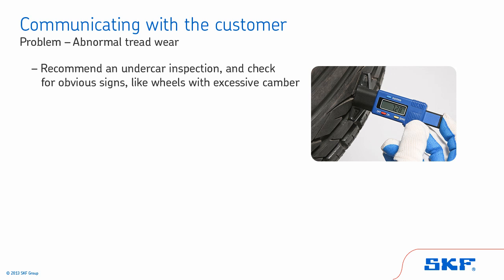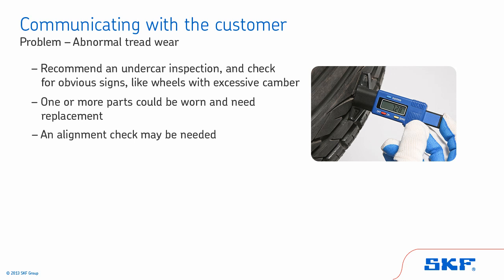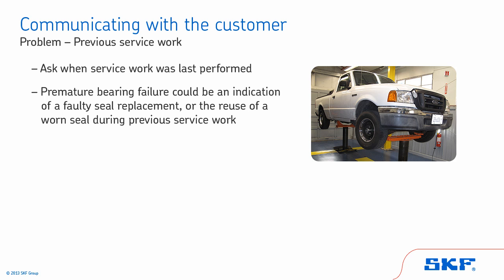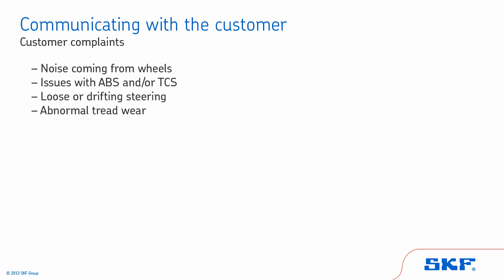During the inspection, look for obvious signs like wheels with excessive camber — one or more parts could be worn and in need of replacement, or an alignment check may be needed. Previous service work: ask when service work was last performed. Premature bearing failure could be an indication of a faulty seal replacement or the reuse of a worn seal during previous service work.